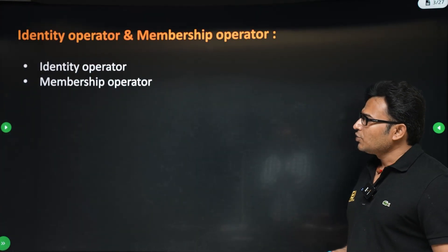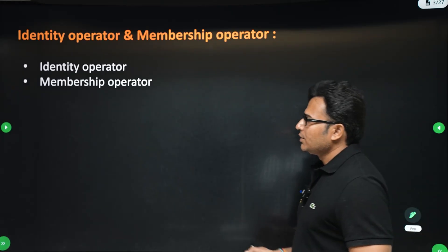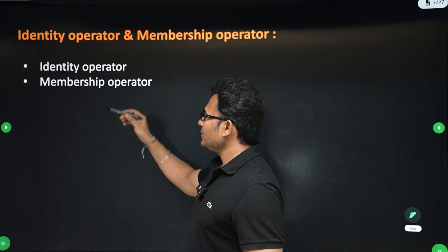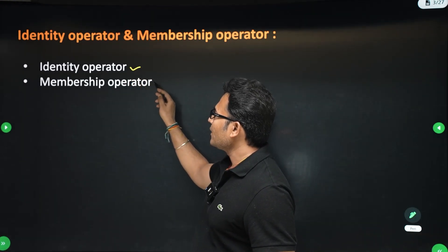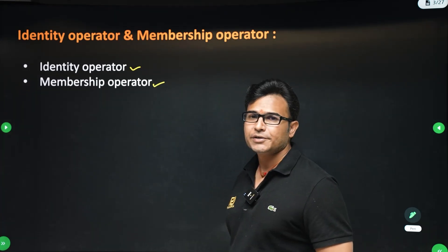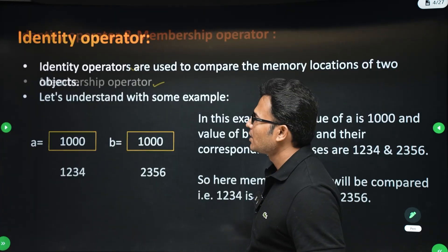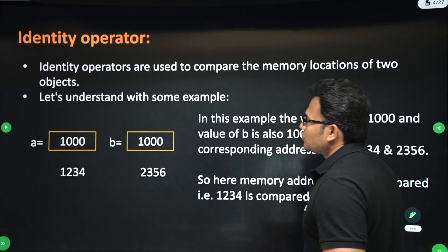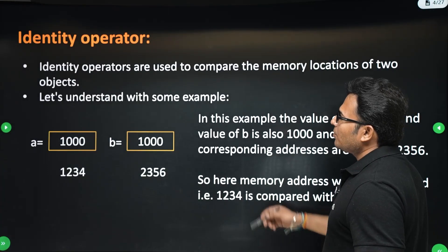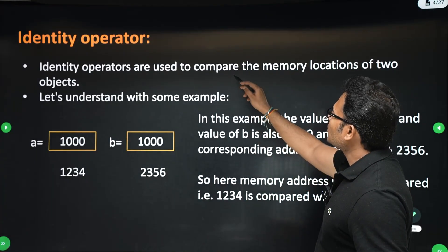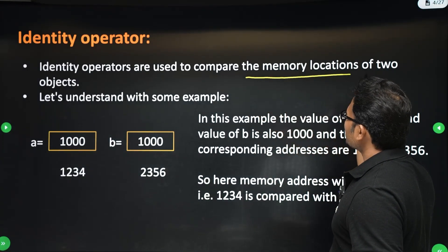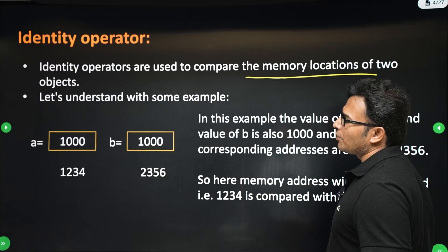In this lecture, we are going to look at two things: the identity operator and the membership operator. Identity operators are used to compare the memory locations of two objects.